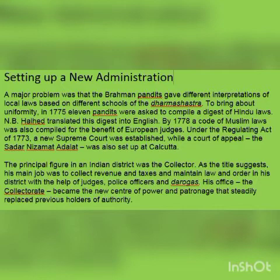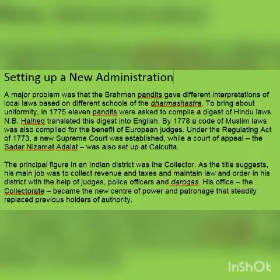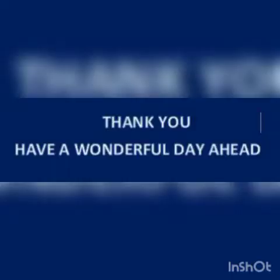The Collectorate slowly replaced the previous holders of authority, who were the Rajas, Maharajas, and local rulers. After the arrival of the British, they set up a new system of government and a new system of justice. In the next class we shall discuss the changes brought about by Warren Hastings in the sphere of army. Thank you and have a wonderful day ahead.